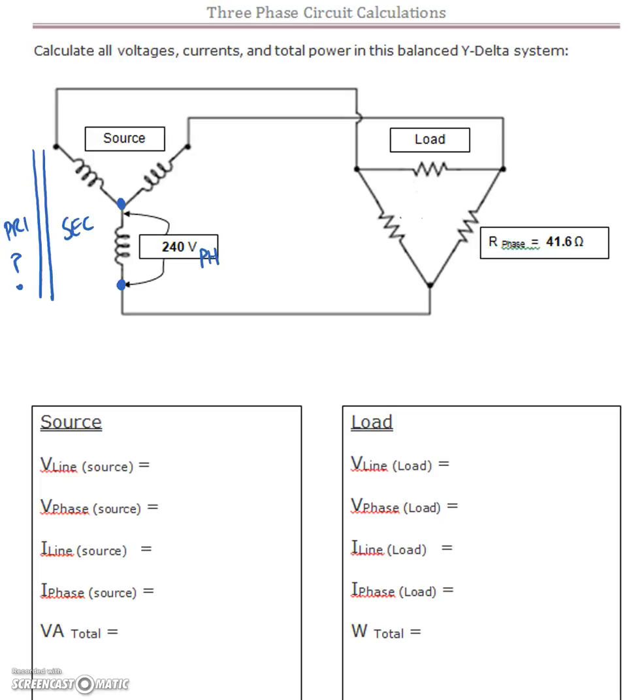Okay, so if we have 240 on the phase, let's stop for a second and write down the rules for both the Y and delta before we go forwards. So here we know that on the Y, our V line is equal to our V phase times root three. And we know for the currents that Y line is equal to Y phase.